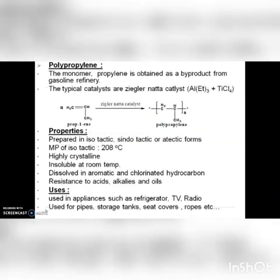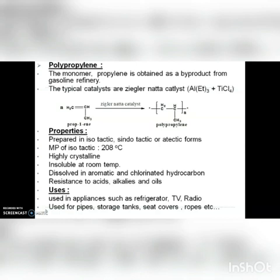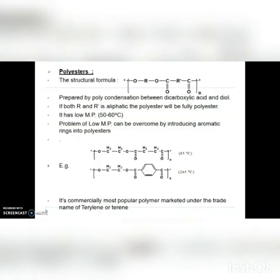The second polymer is polypropylene. The monomer propylene is obtained as a by-product from gasoline refinery. Polypropylene is produced by polymerization of propylene in the presence of Ziegler-Natta catalyst. Properties: it is prepared in isotactic, syndiotactic, or atactic forms; melting point up to 208°C; highly crystalline; insoluble at room temperature; dissolves in aromatic and chlorinated hydrocarbons; and has resistance to acids, alkalis, and oils. Uses include appliances such as refrigerators, TVs, and radios, as well as pipes, storage tanks, seat covers, and ropes.